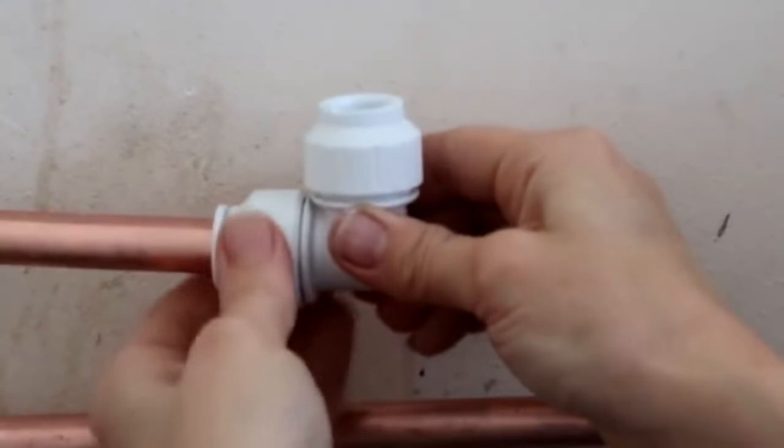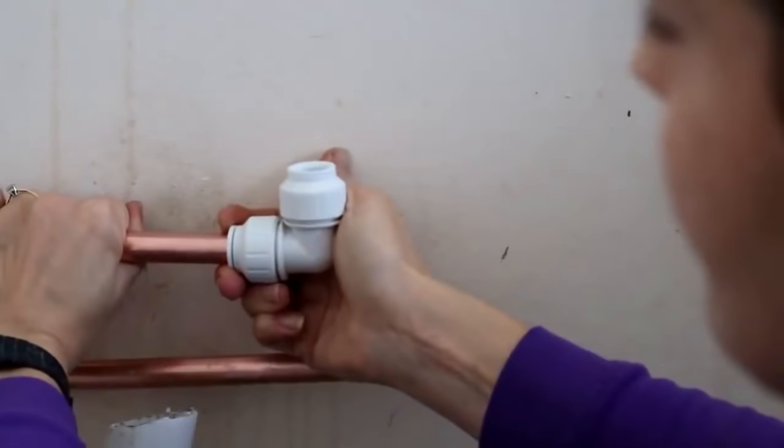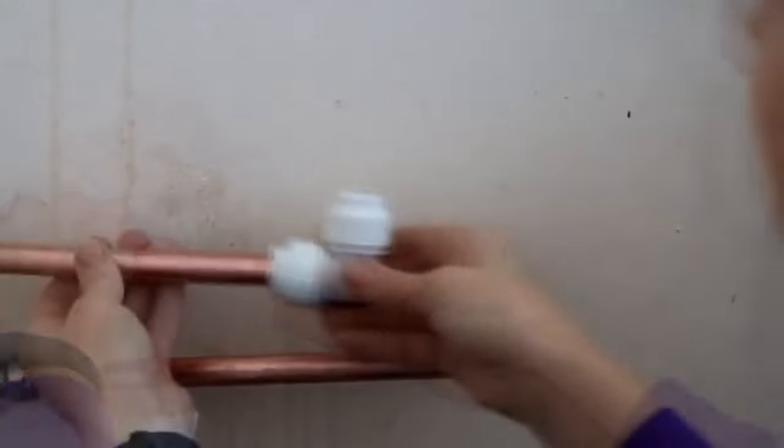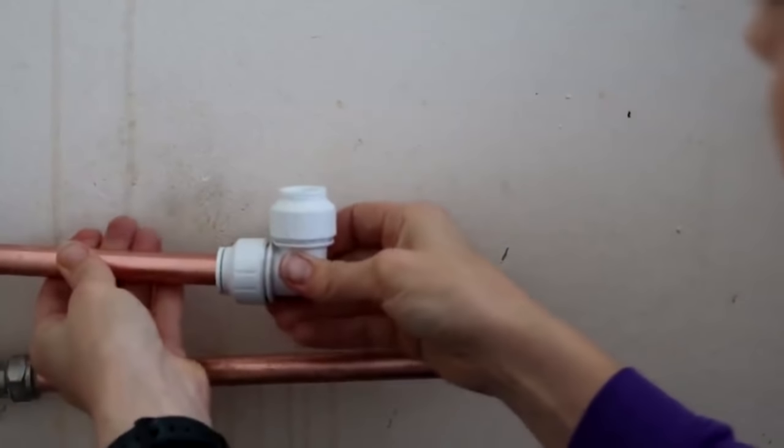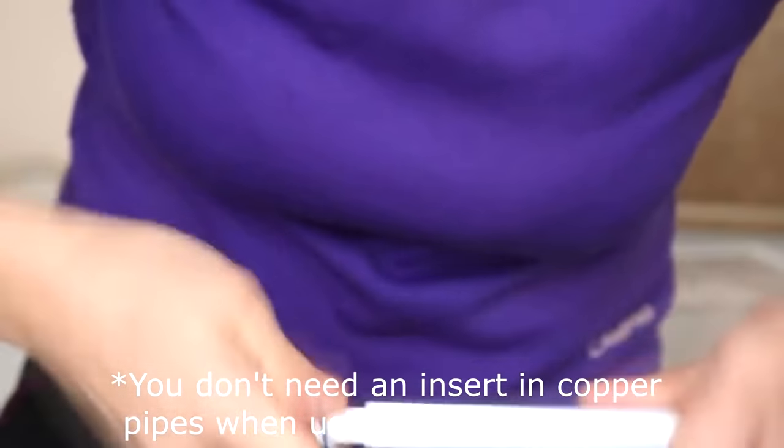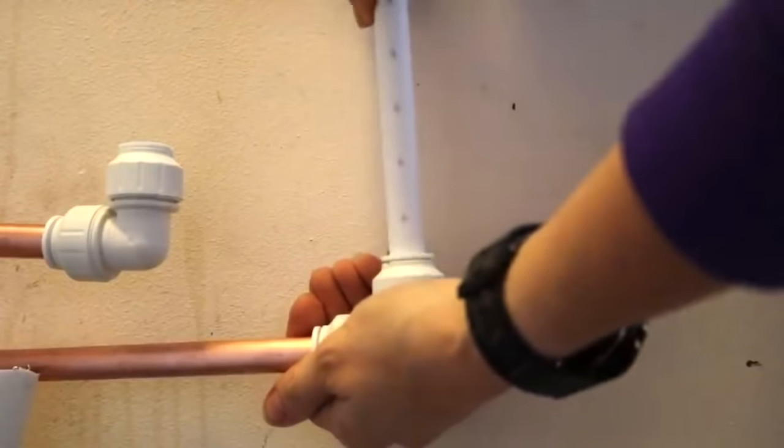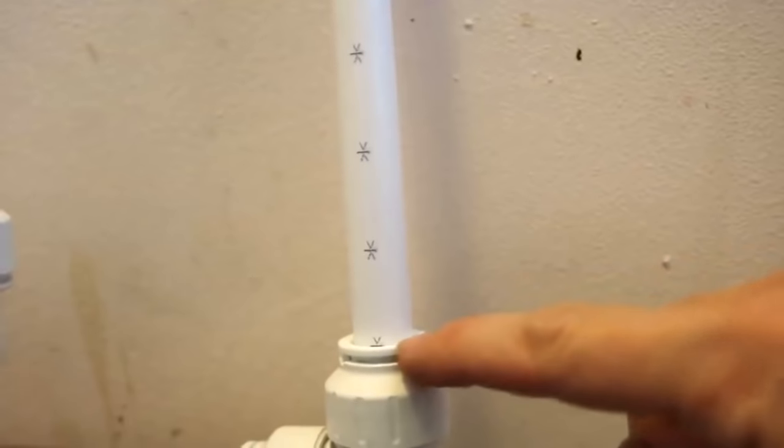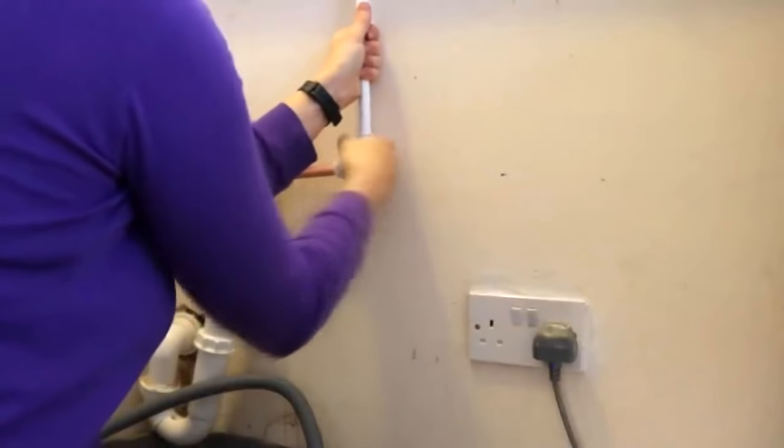But how it works is when you're taking it apart, you unscrew the compression part of the speed fit fitting either from an elbow, a t-junction or a coupler and then you pull the collar towards you to pull it apart. So you're pulling it away from the pipe. But if you're going to put it back together, you need to make sure you've got an insert put in first. Then push the pipe into the fitting as far as it goes. There's usually markers there to say how far you've gone and then screw it tight as a safety precaution.